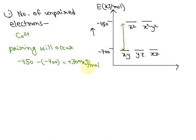This energy gap is huge, that's why pairing will occur. Here Co²⁺ has 7 electrons in the d orbital.